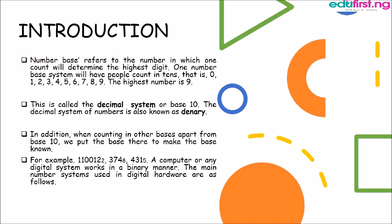Number base refers to the number in which one count will determine the highest digit. Now we have a number base that have people count in tens, that is 0, 1, 2, 3 through to 9. The highest number is 9.